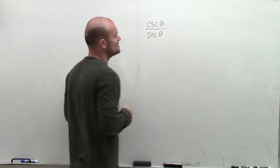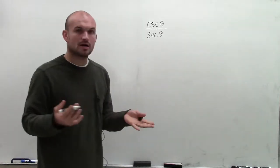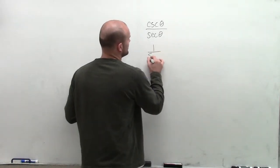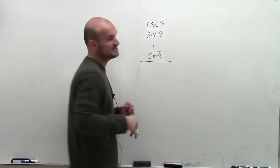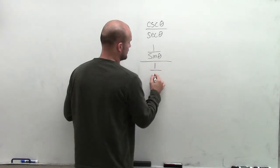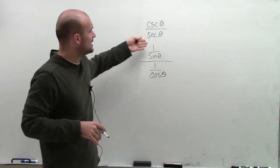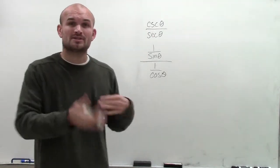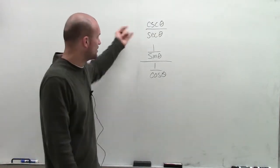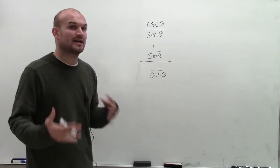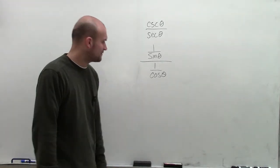So I can rewrite the cosecant of theta by using my reciprocal identities, saying it's 1 over sine of theta, divided by — I can rewrite the secant of theta by saying that's going to be 1 over cosine of theta. Now we can just kind of look at this. There is another way that once you get a little practice, you can already see what it's going to simplify to. But let's just break this down and follow through: 1 over sine of theta divided by 1 over cosine of theta.